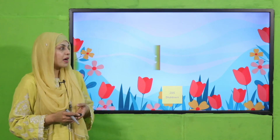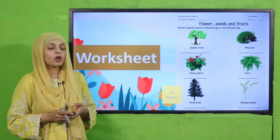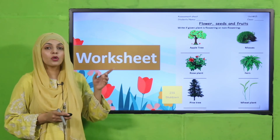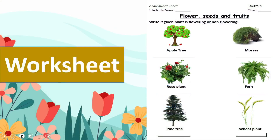Now is the time for practice. You can download this worksheet from the description box below this video or get it from your teacher. Write down your name and class, then write if the given plant is flowering or non-flowering. Apple tree — it has flowers, so it is a flowering plant. Moses — non-flowering. Rose — flowering. Fern — non-flowering. Wheat — that is also a flowering plant.